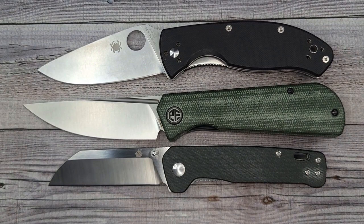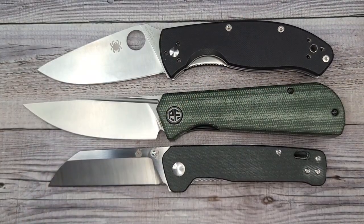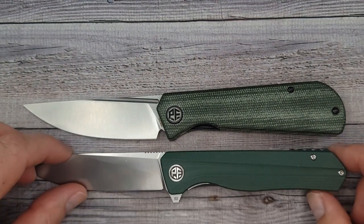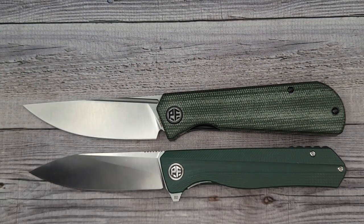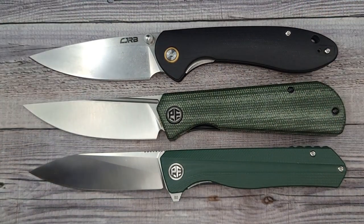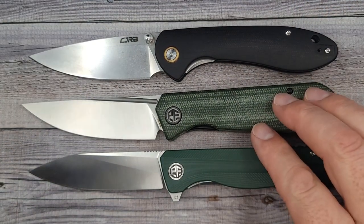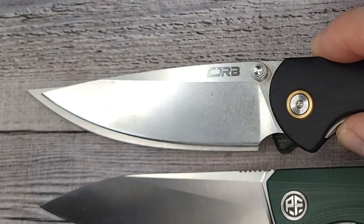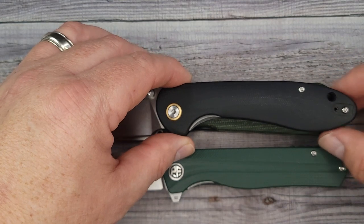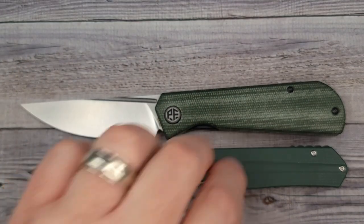Here is the Spyderco Tenacious. It's oh so tenacious. And here's the Petrified Fish PF818 and the CJRB Feldspa. So we're not too far off where we're doing the sizes there. You see you get a little bit more blade and then handle wise it's just about the same.